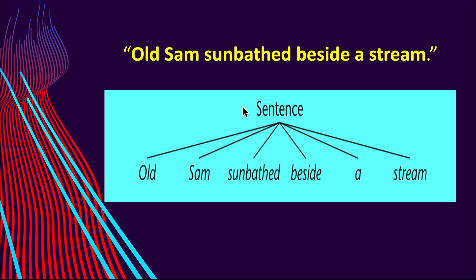Let's draw a tree diagram of the sentence 'Old Sam sunbathed beside a stream.' Is this flat tree diagram an accurate representation of the sentence's structure? Of course not. It only tells us what words appear in the sentence and in what order, but nothing more. This diagram is actually wrong as a description of sentence structure — in essence, it says the sentence has no more structure than a sequence of numbers or an ordered string of beats. That is surely a wrong way to analyze a sentence hierarchically.